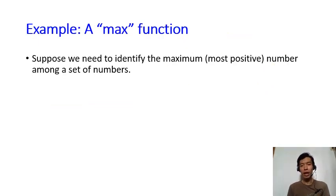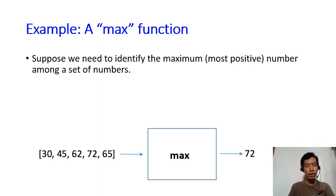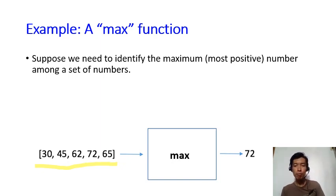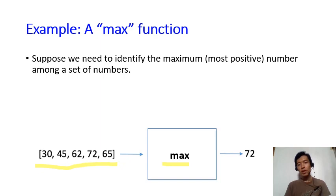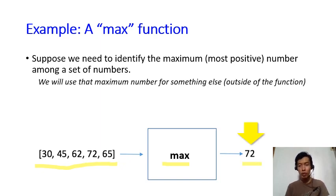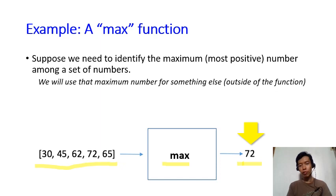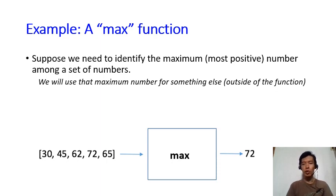Now suppose we need to identify the maximum, or most positive, number among a set of numbers. Say we are given a list of integers and we want to find the most positive number. But not only do we want to display it — we want the function to output that number so we can use it later outside the function, in the main algorithm. This is quite different from before, because now the function must send something out.